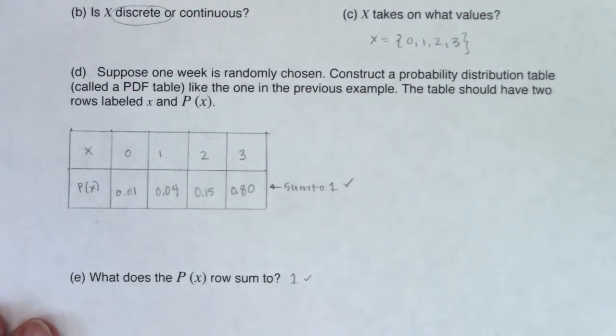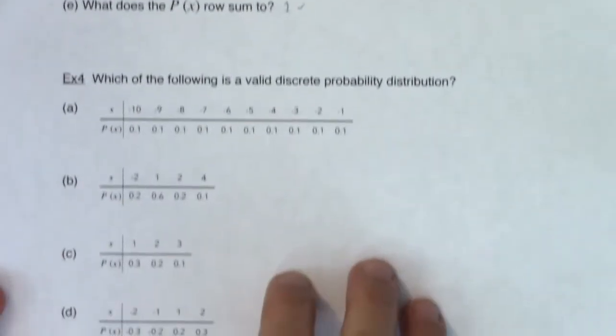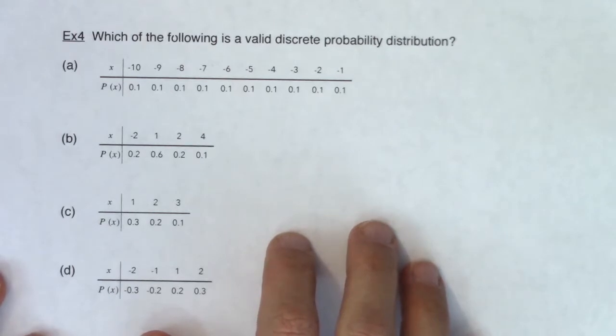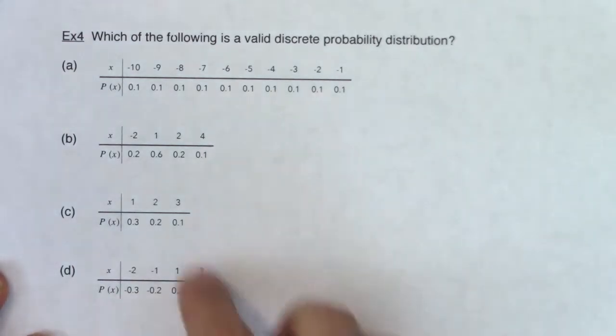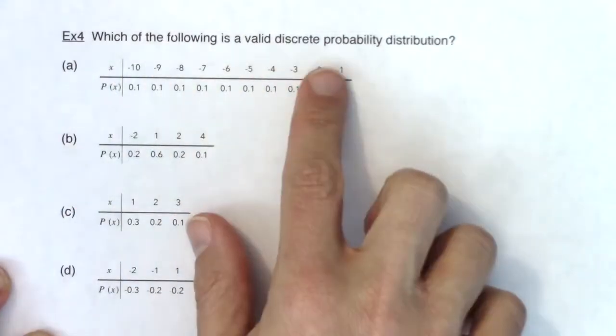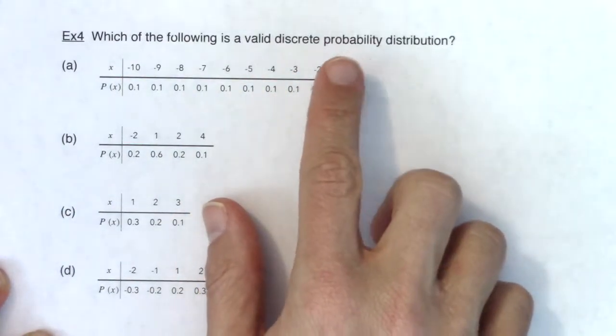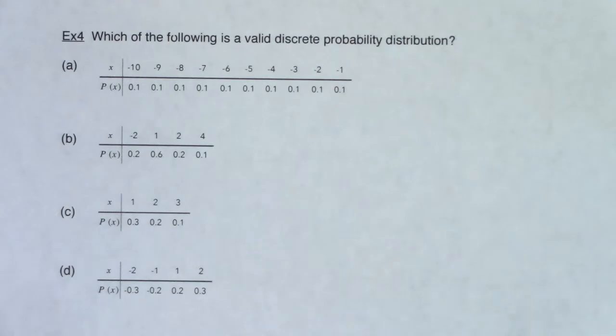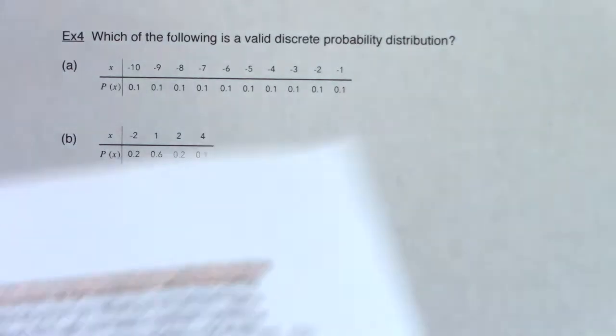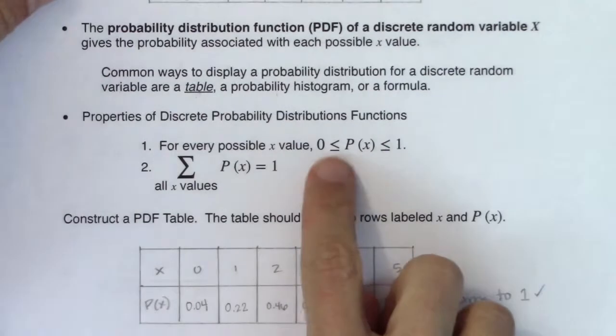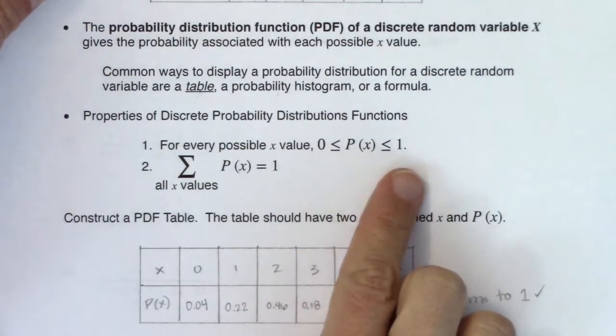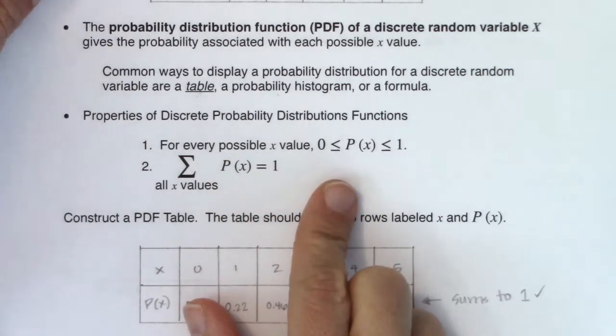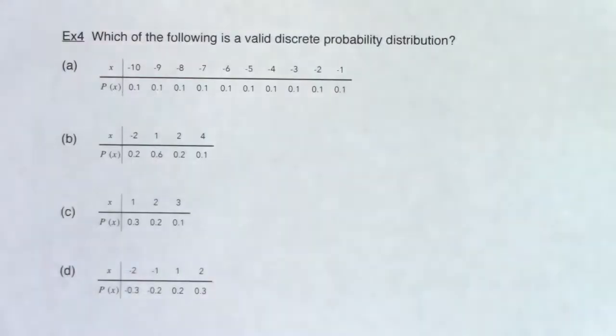All right, so with that, let's try a multiple choice question. So for example 4, I like this problem already on site better because I can just see that they gave me all of my PDFs. I don't have to calculate anything. They're all here. And it's just asking me, hey, which of the following is a legit, a valid, discrete PDF? And if we remember back to the previous page, there were two rules that a legitimate PDF needed to have. So every value had to be between 0 and 1 on that bottom row. And then that bottom row had to add to 1.